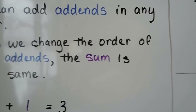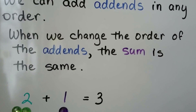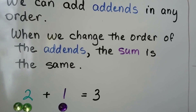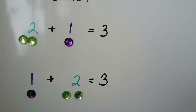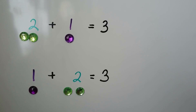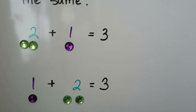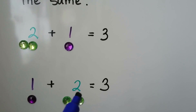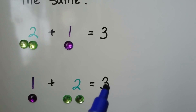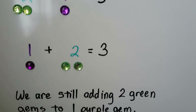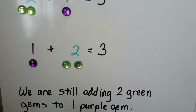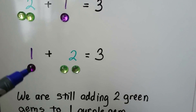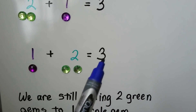We can add addends in any order. When we change the order of the addends, the sum is the same. Two green gems plus one purple gem equals three gems in all. If we change the order and put the one here and the two back here, one gem plus two gems still equals three gems. We are still adding two green gems to one purple gem. We are still going to have three gems.